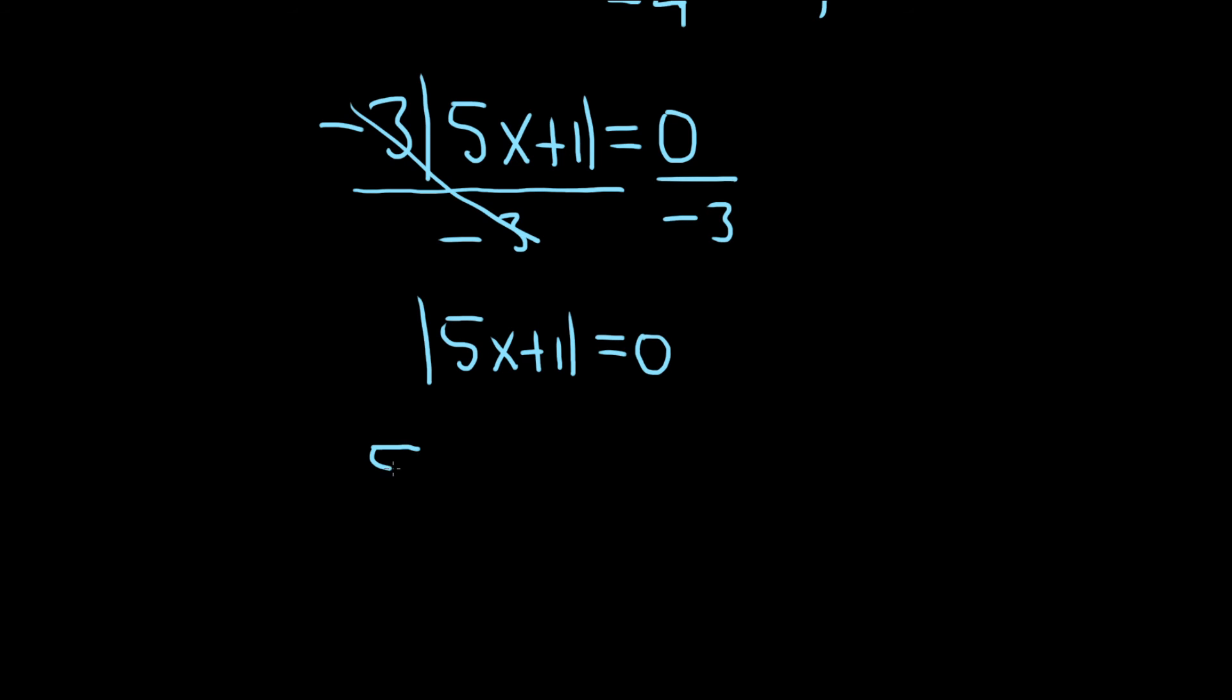We drop the absolute value. So we have 5x plus 1 equals plus or minus 0. But plus or minus 0 is the same thing as 0, so we just get 5x plus 1 equals 0.